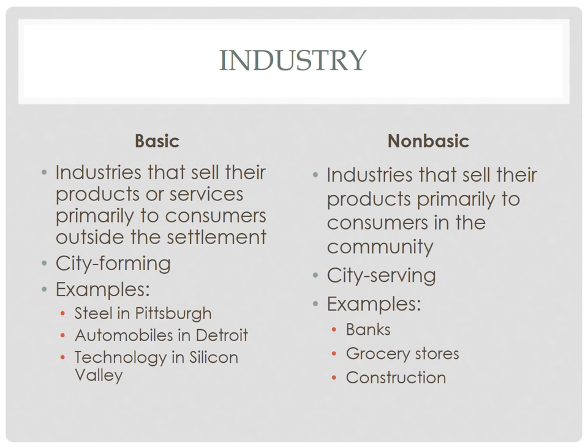Welcome to lecture number five of cities and urban land use, unit number seven of AP Human Geography. We're going to start with a little review of unit six, industrialization and economic development, specifically the difference between basic and non-basic industries.